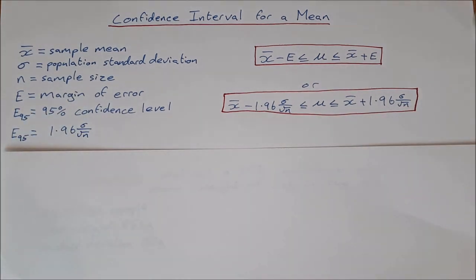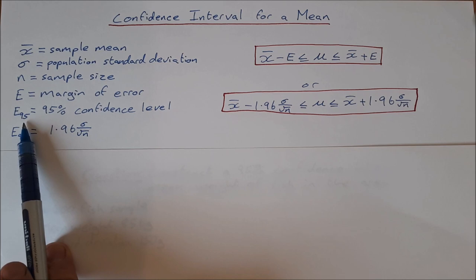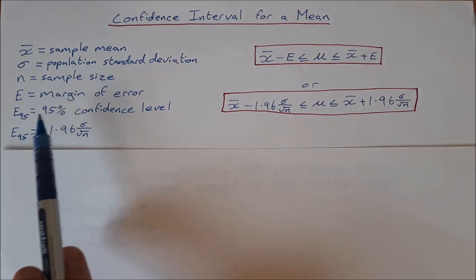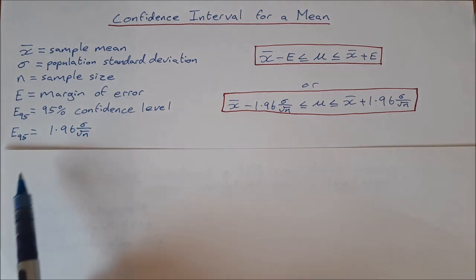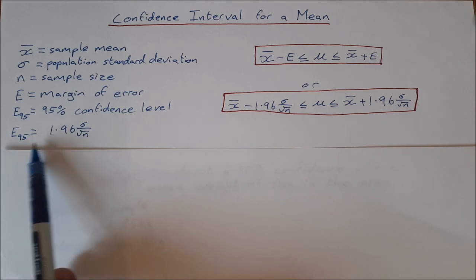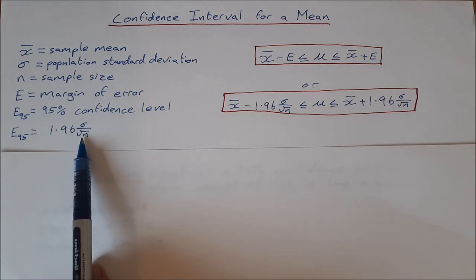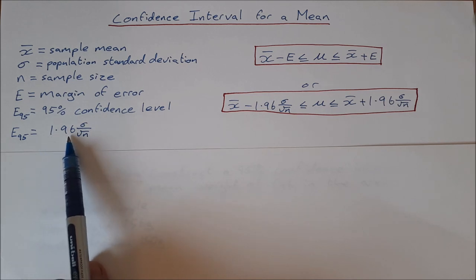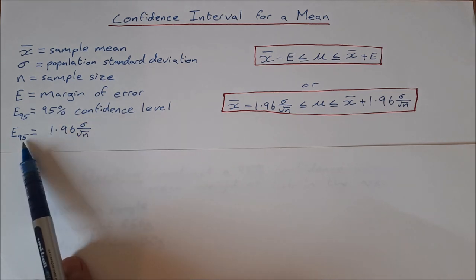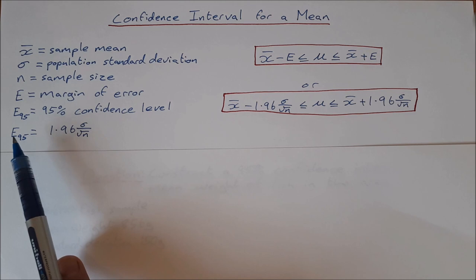We use E₉₅ for this, so E₉₅ gives us the 95% confidence level, and E₉₅ is equal to 1.96 times σ over root n. Now this 1.96 equates to the 95%.